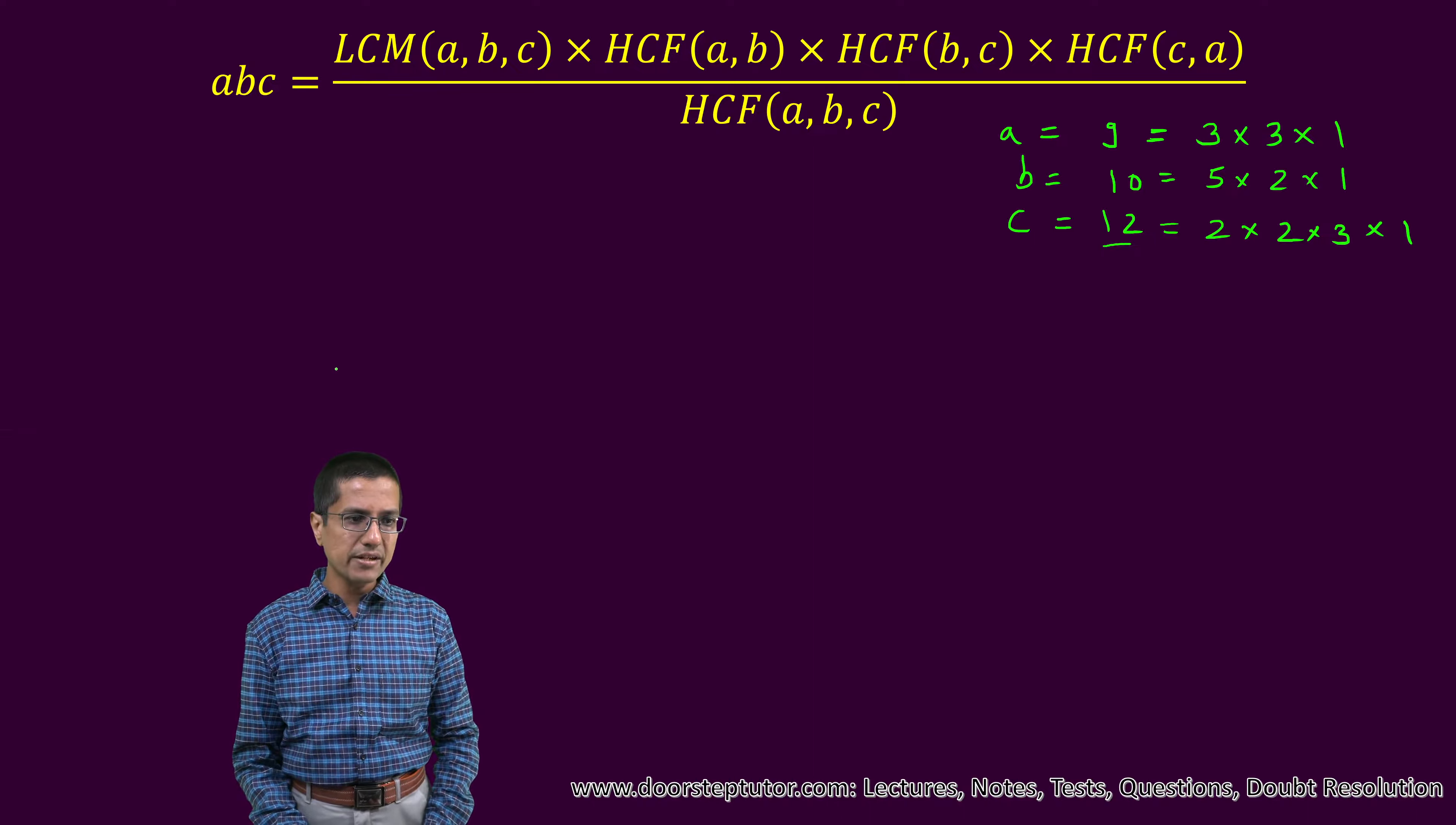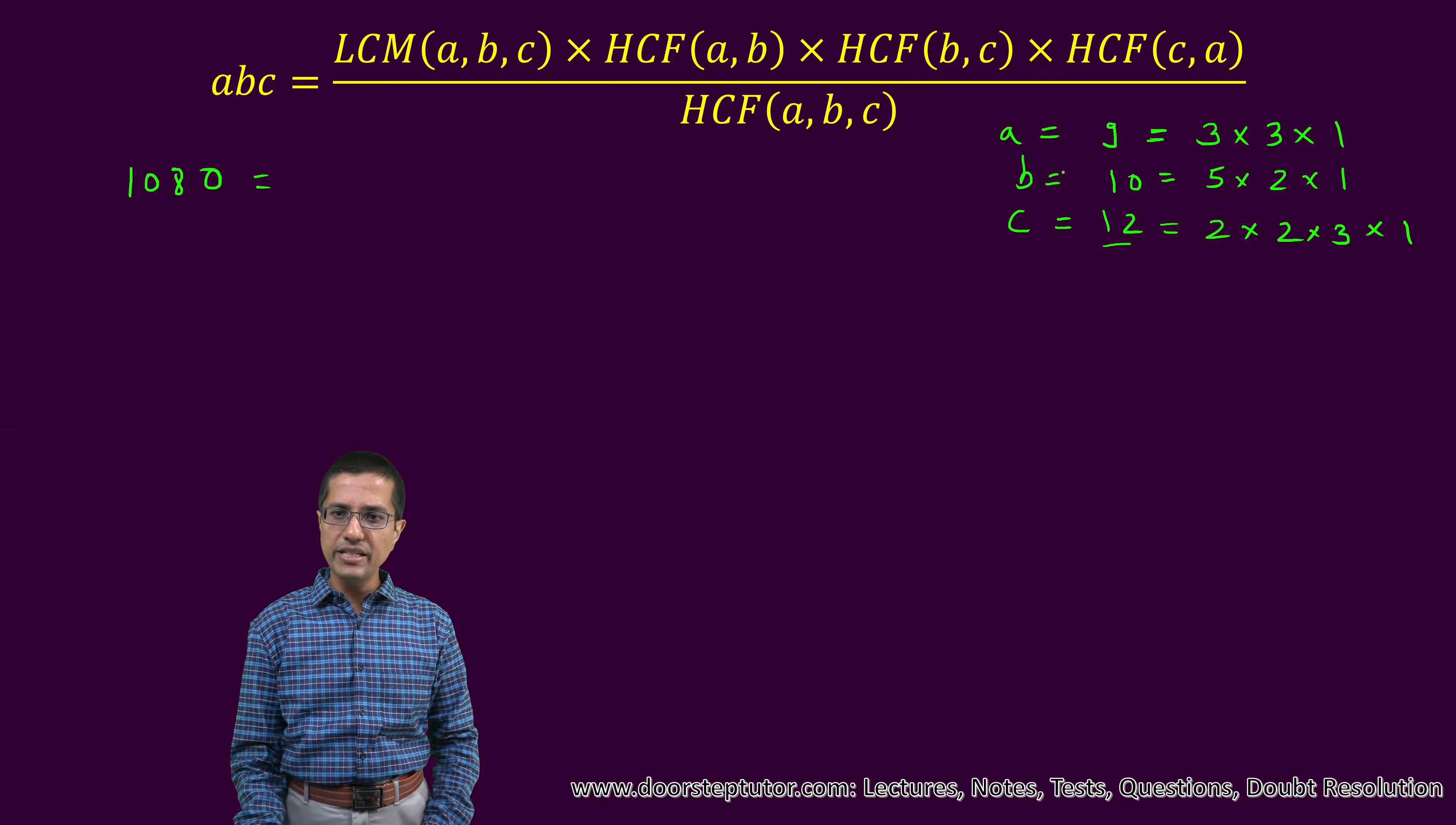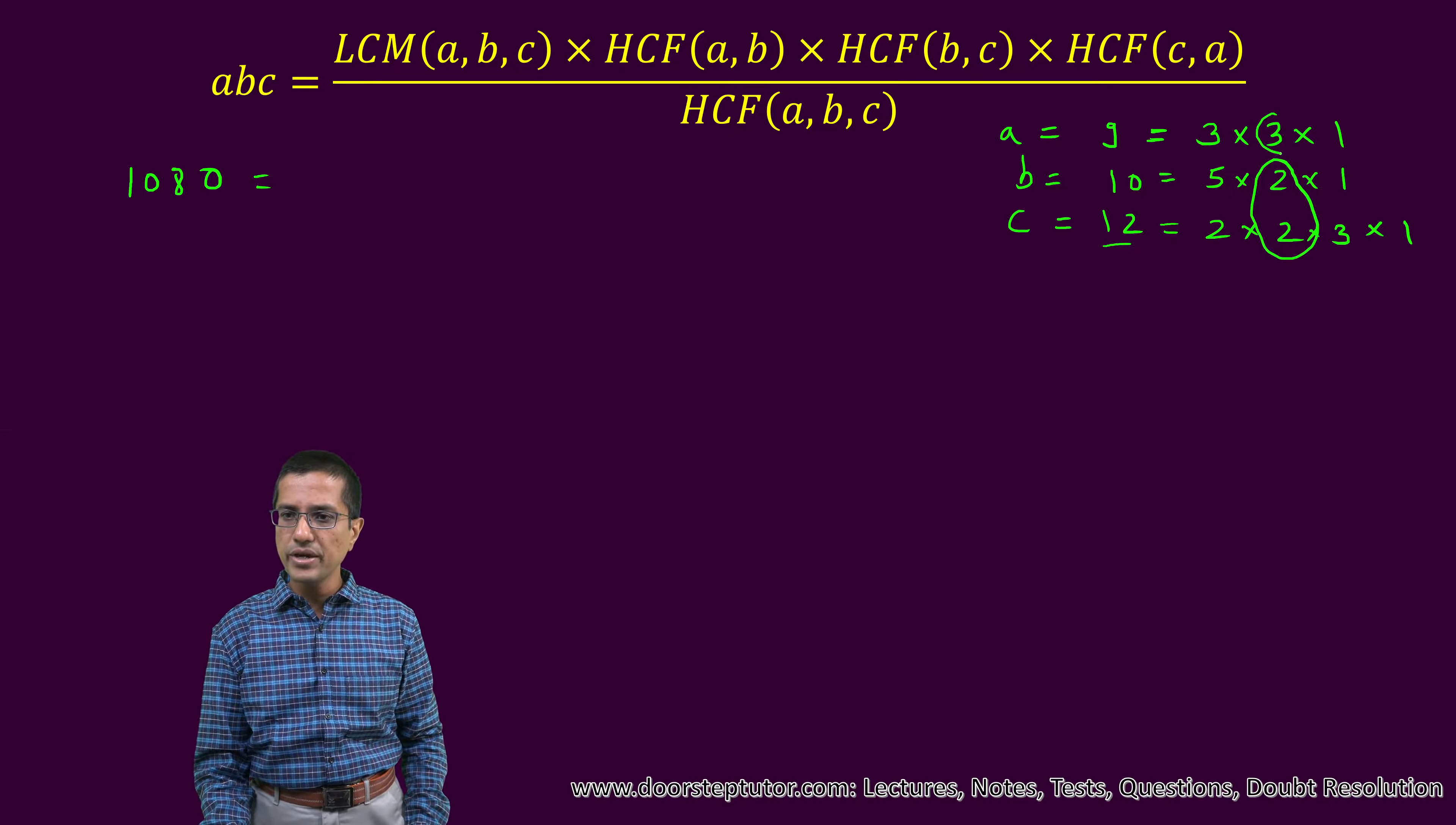So now what we do is that the product of three numbers is of course, we can find that out. The product of three numbers is actually equal to 1080 and LCM of these three numbers. So how do we find the LCM? What do we do? We take the numbers which are common only once, the factors which are common only once. That is the trick here.